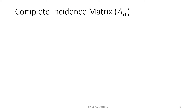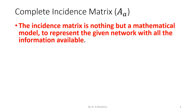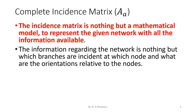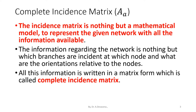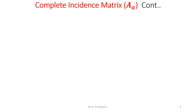We discuss about the complete incidence matrix, capital A suffix small a. The incidence matrix is a mathematical model to represent the given network with all the information available. The information regarding the network is which branches are incident at which node, and what are the orientations relative to the nodes. All this information is written in matrix form, which is called the complete incidence matrix, represented by capital A suffix small a.